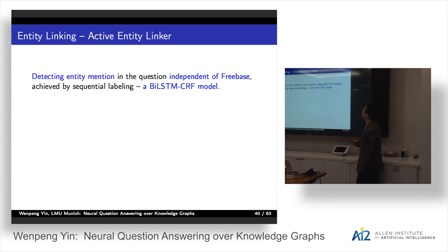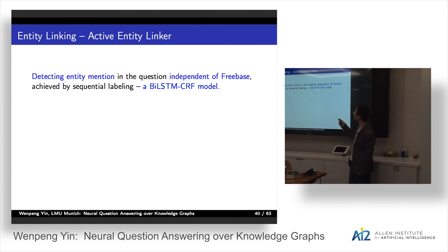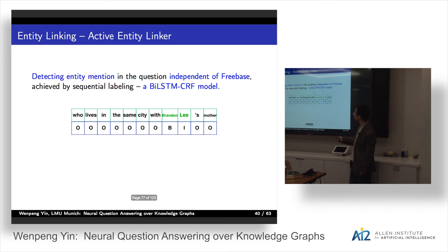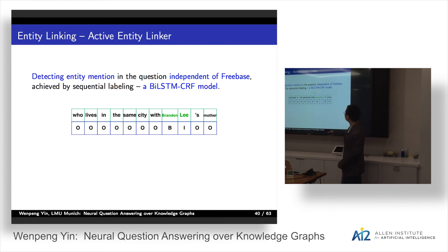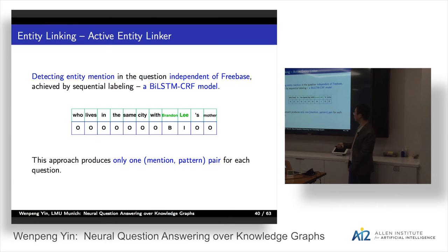For the active entity linker, we detect the entity mention in the question independently of Freebase using a named entity recognizer — for example, we train a BiLSTM-CRF model for this task. For 'who lives in the same city with Brandon Lee's mother', the model detects Brandon Lee as the topic entity. This approach produces only one mention-pattern pair per question, so it gets rid of a lot of noise.